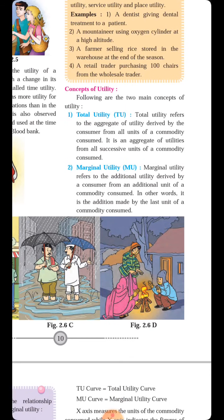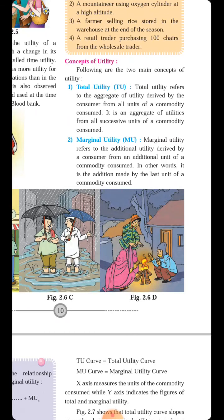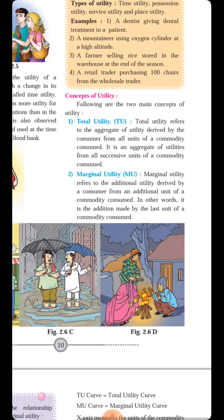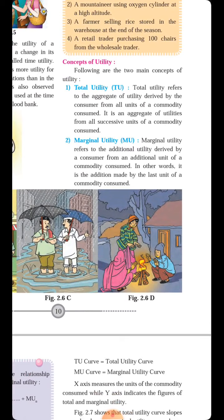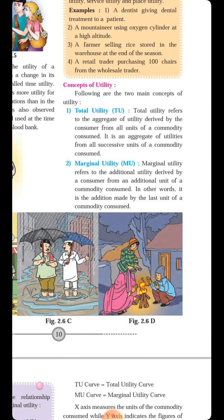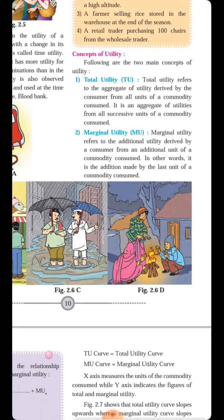After this comes the second concept — Marginal Utility — indicated by capital M and U. Marginal means addition. Whereas in Total Utility we combined and totalled all utility, here we separately calculate the additional benefit received from each additional thing we consume. Marginal Utility refers to the additional utility derived by a consumer from an additional unit of a commodity consumed. Whatever additional benefit is received from consuming an additional unit of any commodity — that is called Marginal Utility.